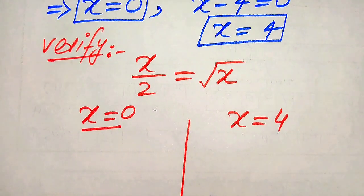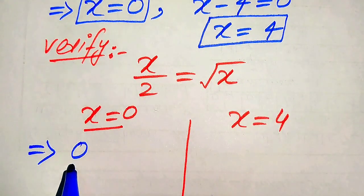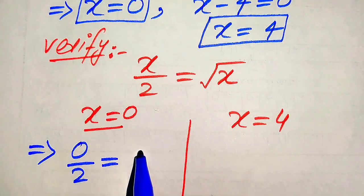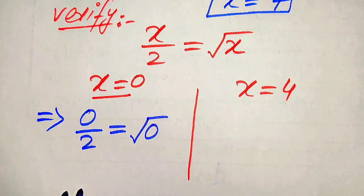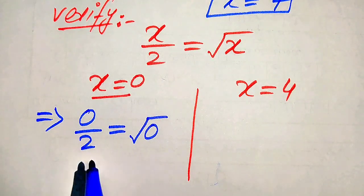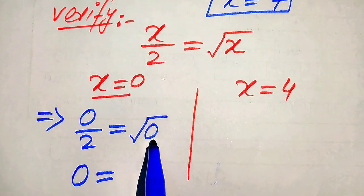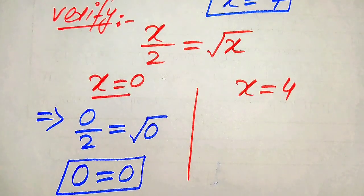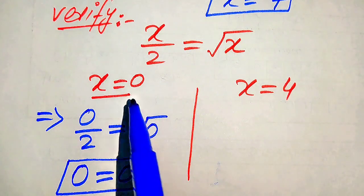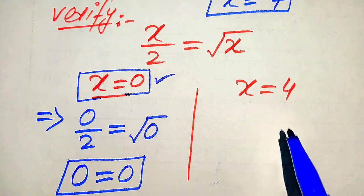First we substitute x equals 0 into the equation. After substituting on both sides it becomes 0 over 2 equals the square root of 0. We know that 0 divided by any number is 0, so the left hand side is 0. The square root of 0 is also 0, so the left hand side equals the right hand side. This means x equals 0 satisfies the given equation and is the first root.